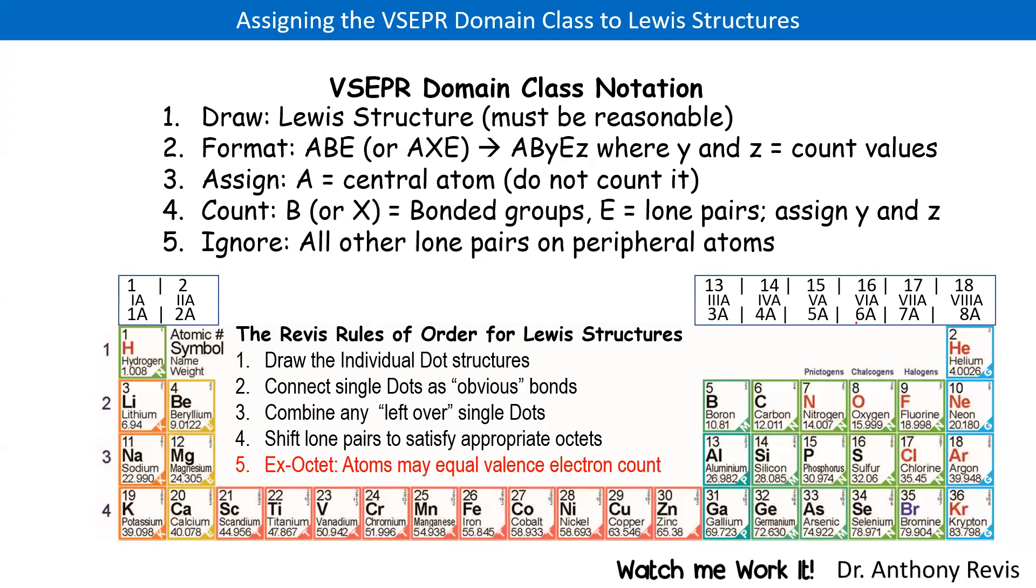The A stands for the central atom. You never count the central atom, but you want to count the atoms attached to the central atom, and you want to count the electrons attached to the central atom. Note, when it comes to domain classification, it is only about the central atom. We are not concerned about the lone pairs and other atoms on the peripheral atoms.